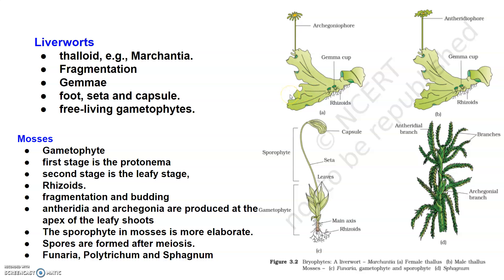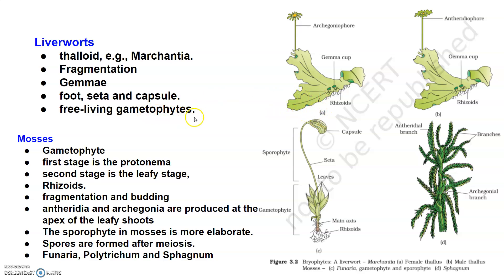In sexual reproduction, male and female reproductive organs are produced either on the same or on different thalli. The sporophyte is differentiated into foot, seta and capsule. After meiosis, spores are produced within the capsule, and these spores germinate to form free-living gametophytes.